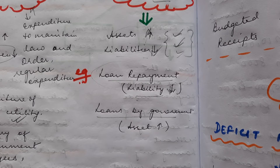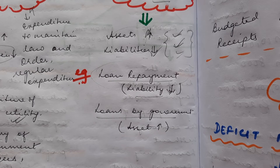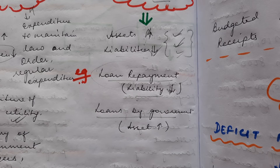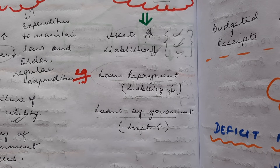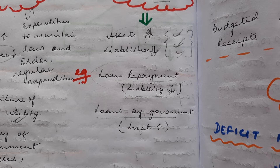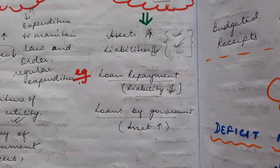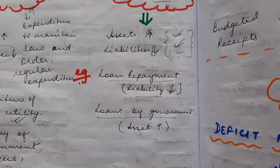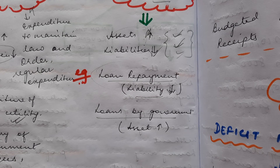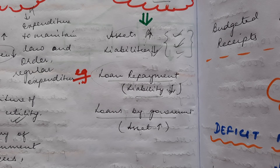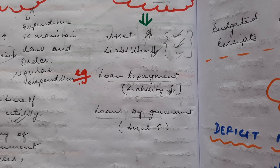So under budgeted expenditure — the estimated expenditure during a financial year — it is divided into two: revenue expenditure and capital expenditure. Under revenue expenditure, you have the recurring expenditures of the government. Recurring expenditures are like rent, electric bills, and groceries — things you pay every month. From the government's point of view, expenditure that leads to public utility and recurs month after month is an example of revenue expenditure.